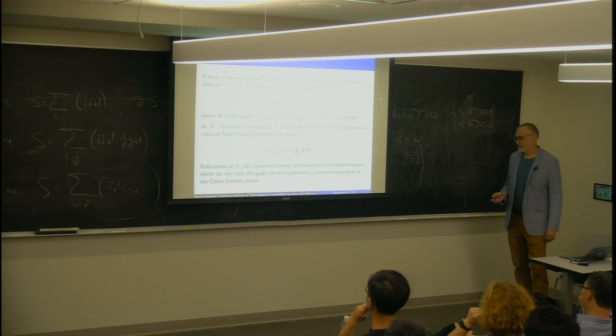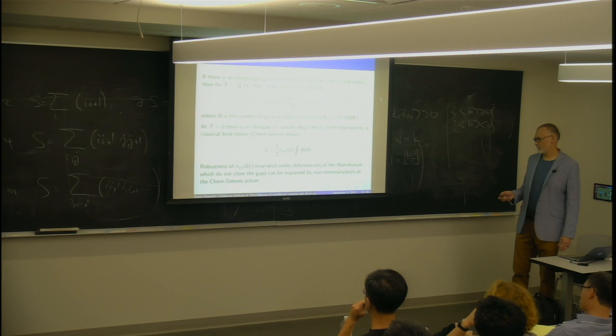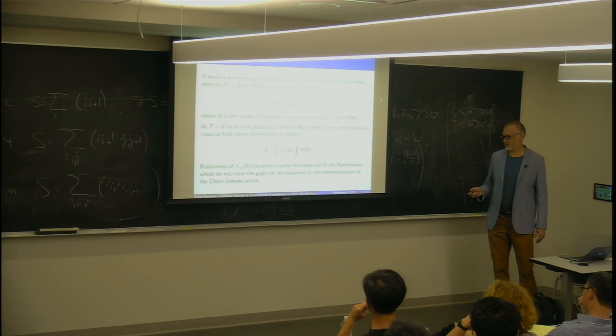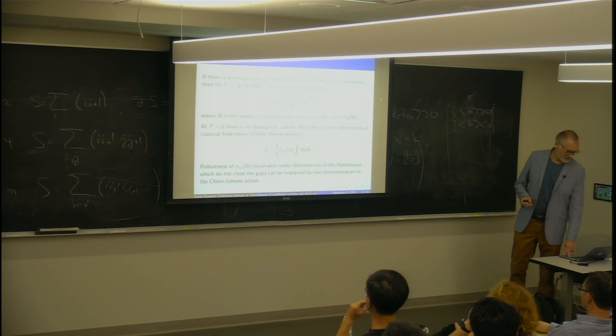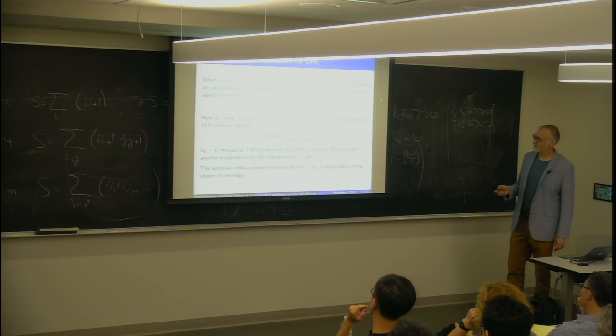And this coefficient actually, it's a rational number. It has a property - it's robust. It can't change if you perturb the Hamiltonian. And from the field theory point, it's just a number of the Chern-Simons action. So this number is sort of quantized in this sense. You cannot change it as soon as you change the Hamiltonian.